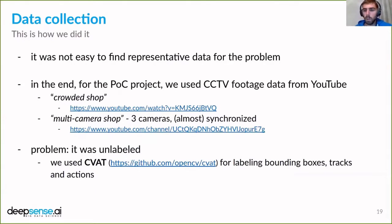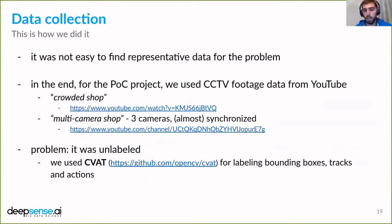One video was the crowded shop sequence shown at the beginning of the presentation, and another three videos came from a scene we named multi-camera shop — the same scene shown from different cameras mounted in the same shop, with almost synchronized videos. But the data was unlabeled and unannotated. So we found CVAT, the Computer Vision Annotation Toolkit, part of the open-source OpenCV library. We used CVAT for manual labeling of bounding boxes, tracks, and actions, with some semi-automatic labels from object detection for bounding boxes, then manually labeling the tracks and actions.